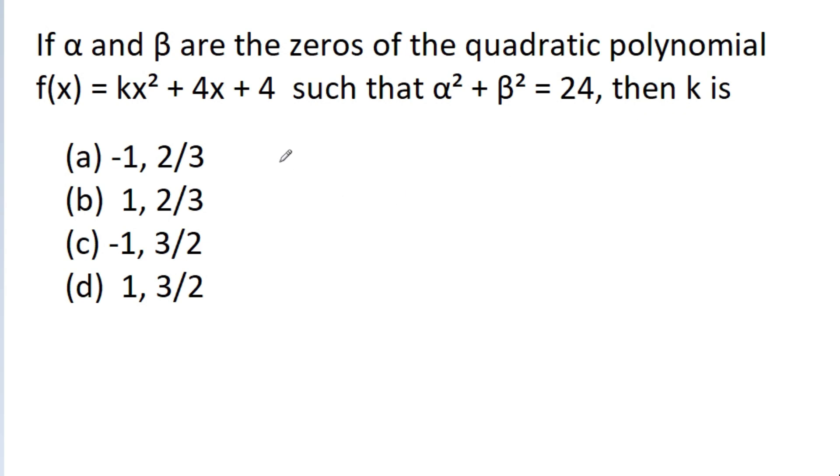So, the given polynomial is f(x) = kx² + 4x + 4 whose roots are alpha and beta. We know that sum of roots α + β equals -b/a, so it will be -4/k. And product of roots α·β is c/a, so it will be 4/k.